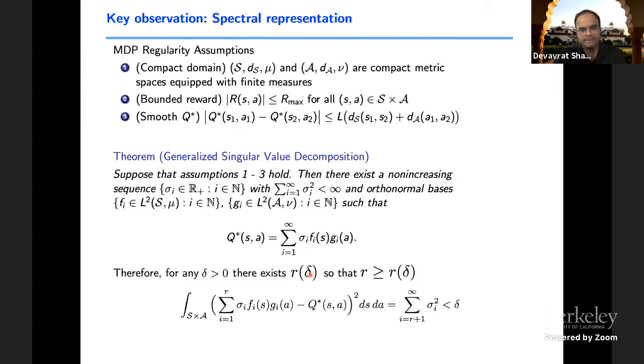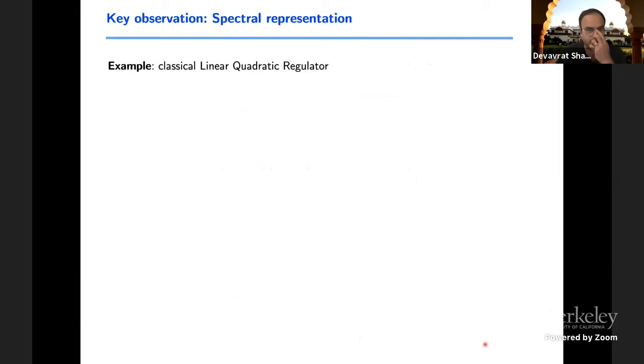Of course, the question is that how fast does R of delta decay as a function of delta? That's an interesting study. I'll leave that as an interesting question to think about. There are a few things we know for nice analytic functions and so on and so forth, but I'm going to spare us from that for the time being. Now with this in the tradition, the way we think of rank, I would define rank of Q star as the smallest i beyond which the singular values are zero or delta rank in this sense.